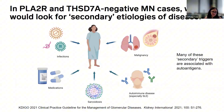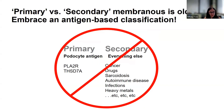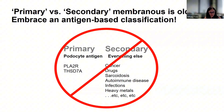Many secondary etiologies are now known to be associated with different underlying antigens, so we have moved away from a primary versus secondary classification toward an antigen-based classification. As recently as five years ago, PLA2R or THSD7A positivity was considered primary renal-limited autoimmune disease, and everything else secondary. But now, knowing multiple different antigen types, we can better identify disease associations, making an antigen-based classification the preferred approach.